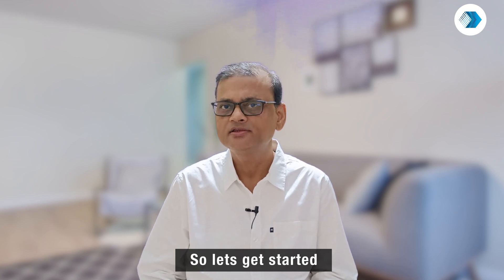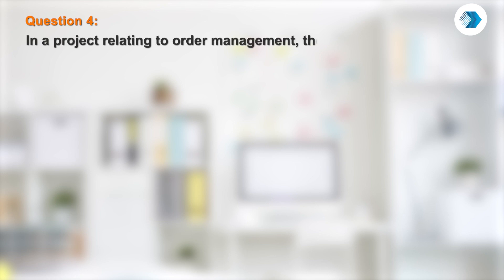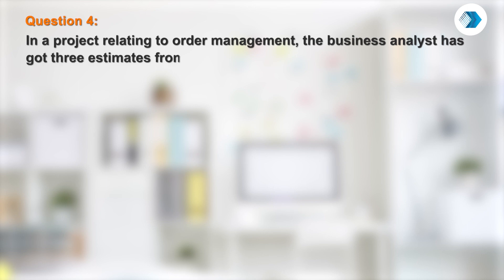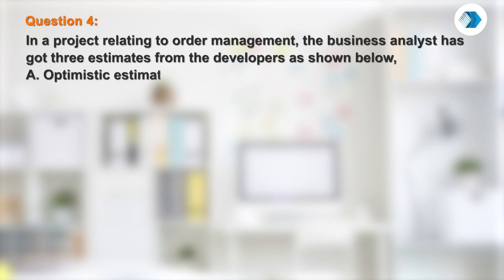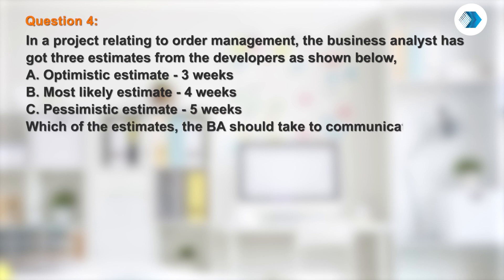Let's get started with today's question. In a project relating to order management, the business analyst has got three estimates from the developers: optimistic estimate 3 weeks, most likely estimate 4 weeks, and pessimistic estimate 5 weeks. Which of the estimates should the BA communicate to the stakeholders or to the customer?